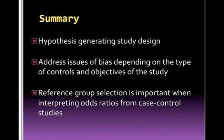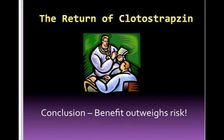To summarize, case control studies are hypothesis generating and causation cannot be shown. It is important to assess potential confounders depending on the type of controls and objectives of the study, and to interpret the findings correctly based upon the control group utilized. You conclude that the physician's actions are not warranted and that the evidence from the case control study does not prove that clodostrapsin is associated with cancer. Based on the risk to benefit ratio of this medication, you have a discussion with the physicians regarding your concerns with this study. The physicians agree that this is not enough evidence to discontinue use of clodostrapsin, and further study is needed to show an association between clodostrapsin and cancer.